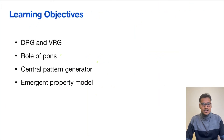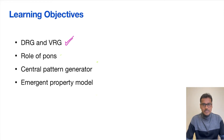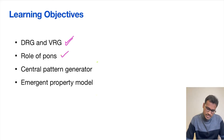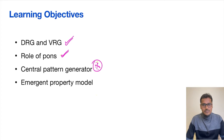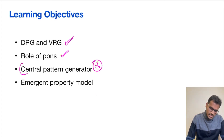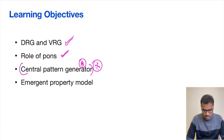We are going to see the DRG and VRG — that is our dorsal respiratory group and ventral respiratory group — and their individual divisions which we did not see previously, the present role of pons in respiratory control, as well as something called a central pattern generator. The concept of respiratory control is given by this central pattern generator, which is beautifully described by the emergent property model.